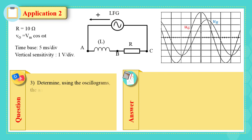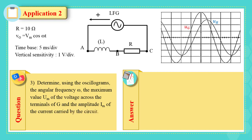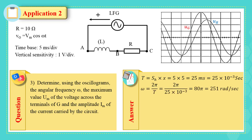Question 3: Determine using the oscillograms the angular frequency omega, the maximum value Um of the voltage across the terminals of G, and the amplitude Im of the current in the circuit. Using the formula omega equals 2π over T, we first find the period T. T equals the horizontal sensitivity sh multiplied by x, the number of divisions during one cycle. x equals 5 and sh equals 5 ms, so T equals 5 × 5 = 25 milliseconds, which equals 25 × 10⁻³ seconds.